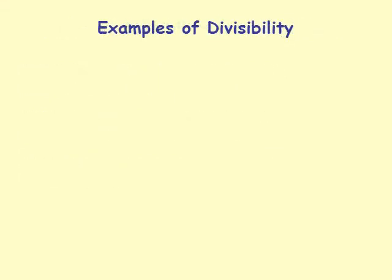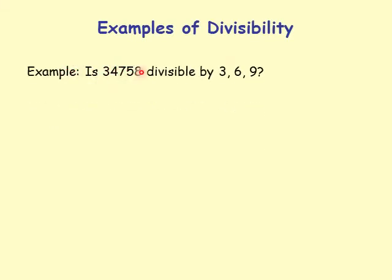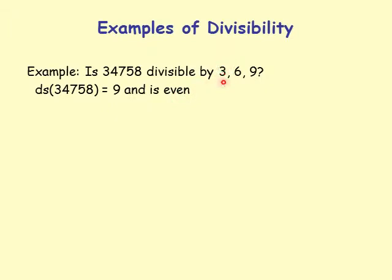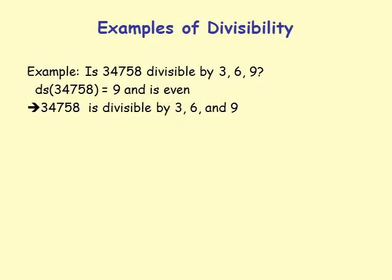Examples of divisibility: is 34758 divisible by 3, 6, and 9? Its digit sum is 3 plus 4 plus 7 plus 5 plus 8 equals 27, digit sum of 27 is 9, and the number is even. So 34758 is divisible by 3, 6, and 9.